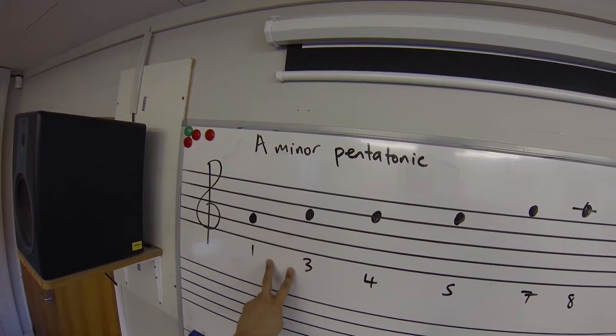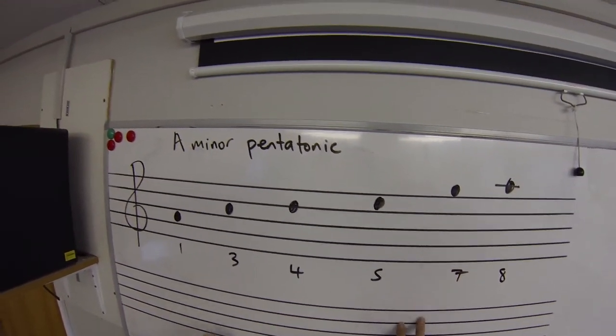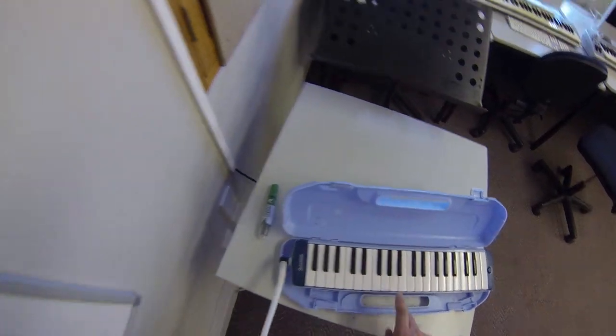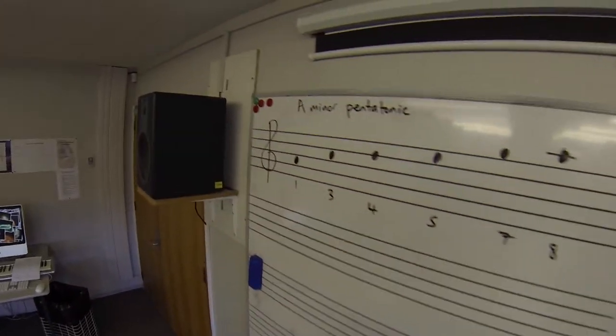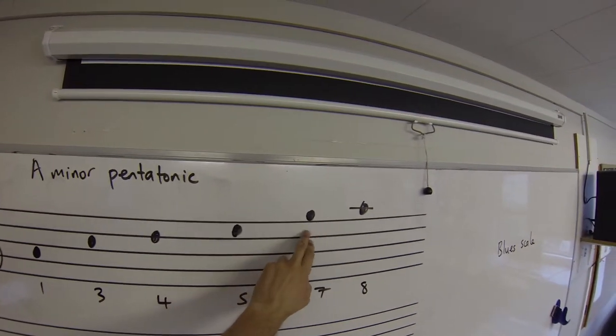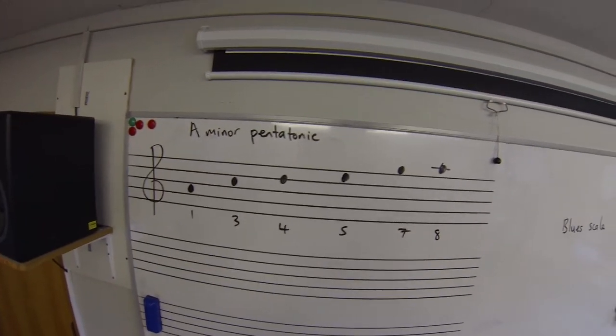The two notes from A minor that have been removed are note 2 and note 6. I'll just pull up an A here: 1, so that's my 1, 3, 4, 5, 7, 8. So that's the A minor pentatonic.